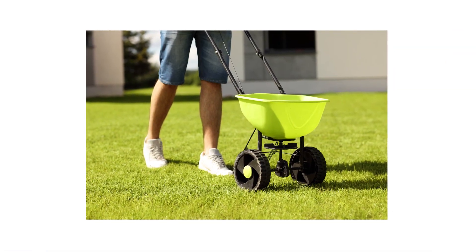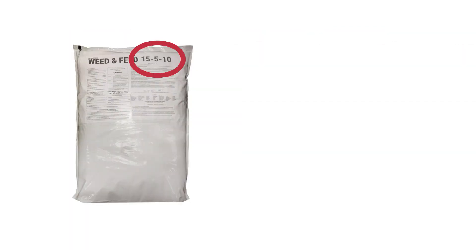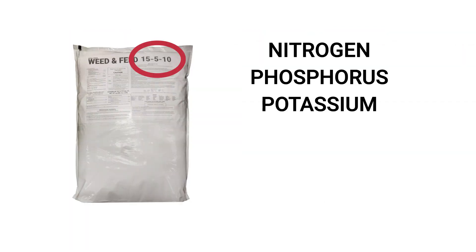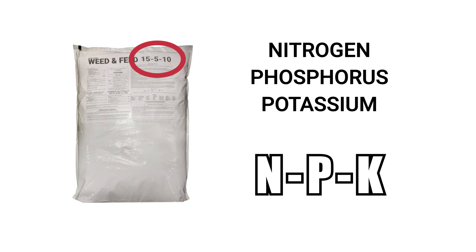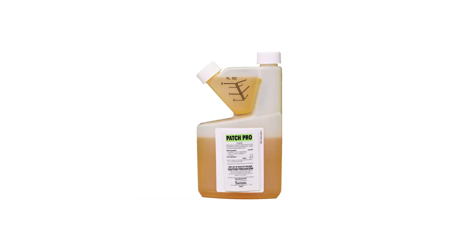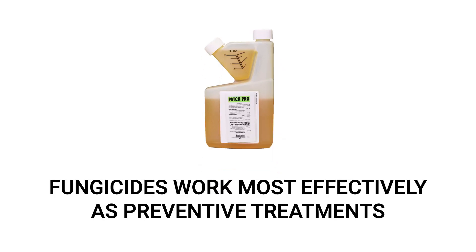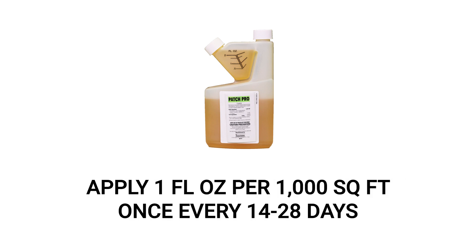Another way to boost your lawn's health is to fertilize it properly. When shopping for a fertilizer, pay attention to the product's nitrogen, phosphorus, and potassium content — the NPK ratio — and pick one that will keep your lawn's contents at appropriate levels. Finally, keep up with regular applications of Patch Pro. Fungicides operate best as preventative applications; to protect your lawn from anthracnose, make a preventative application with 1 fluid ounce of product per 1,000 square feet once every 14 to 28 days.